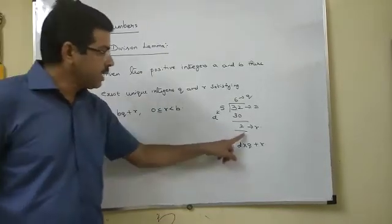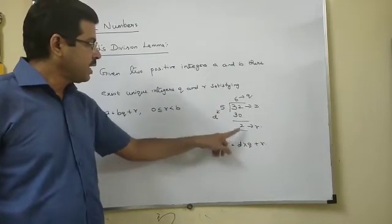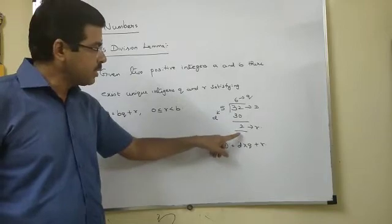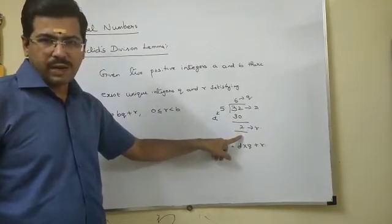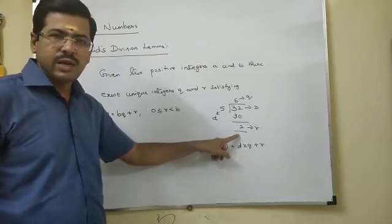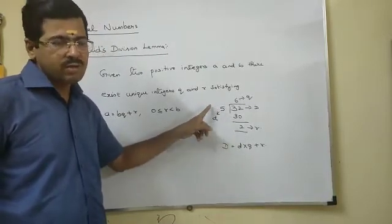What is this meaning? Remainder will always be less than the divisor. For example, here, 2 is the remainder, 2 is less than 5. Suppose if we have 3, that is also less than 5. If we have the remainder 4, that is also less than 5.